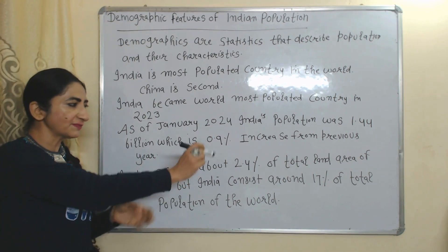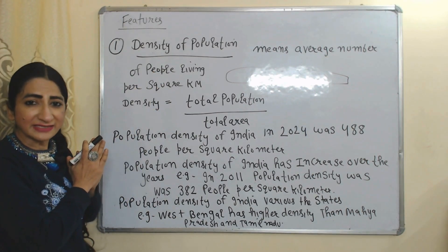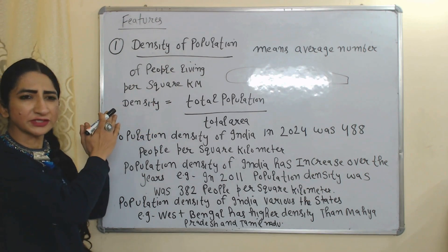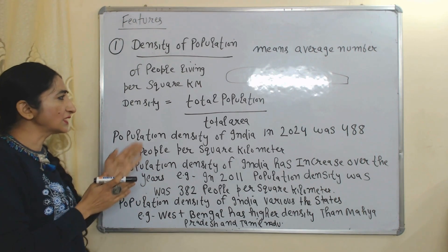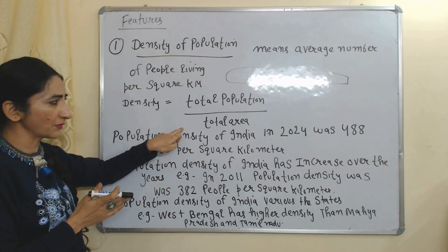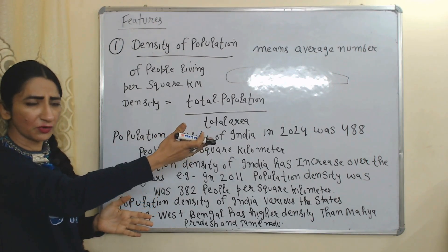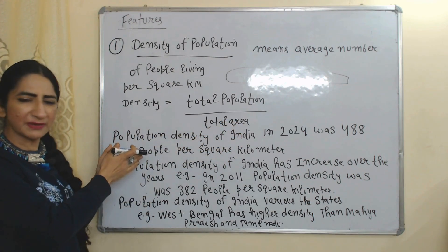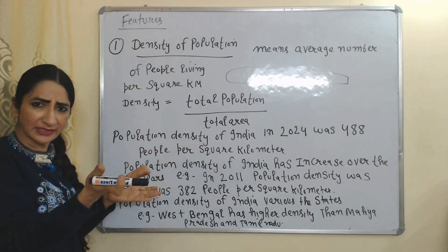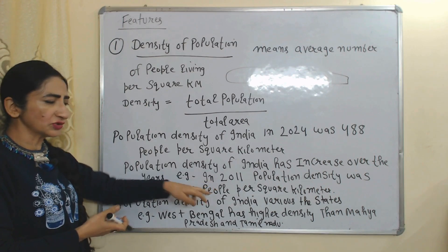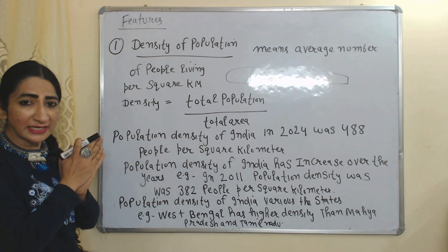India consists of around 17% of the total population of the world. The first feature is density of population, which means the average number of people living per square kilometer. We calculate it by dividing total population by total area. Population density of India in 2024 was 488 people per square kilometer, and it has increased over the years.